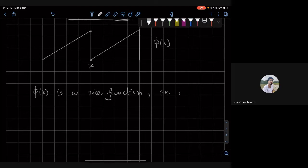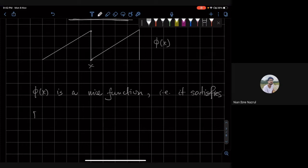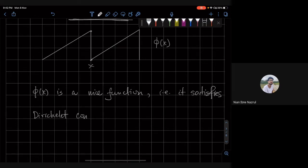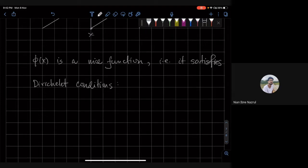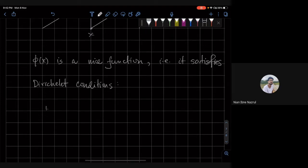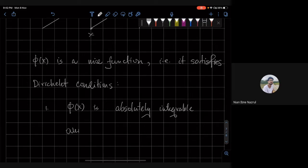That is, it satisfies certain Dirichlet conditions. What is a Dirichlet condition? One is that phi of x is absolutely integrable over some interval.